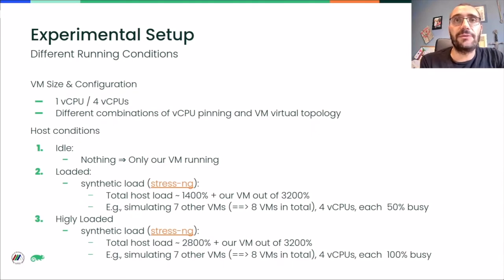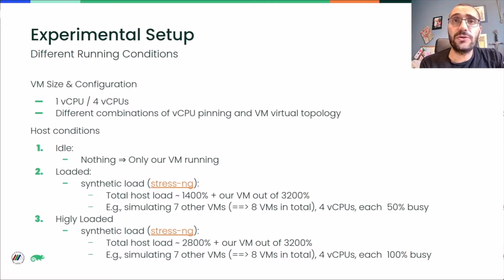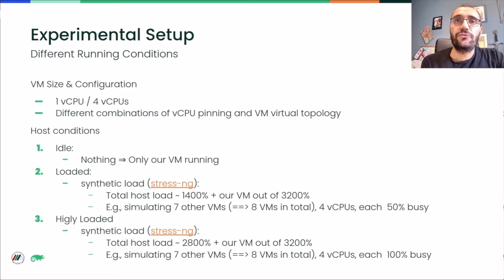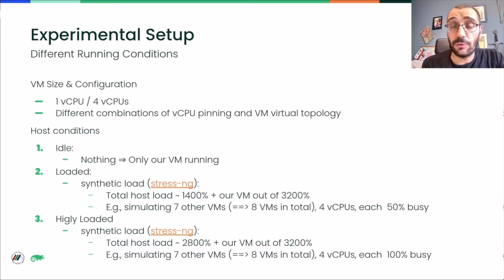We ran all those benchmarks inside our one vCPU VM and then inside the four vCPU VM, and we considered different load conditions for the host. We ran them on an idle host, with 50% load on the host without counting our VM, and with 100% load on the host. For generating load on the host, we used stress-ng threads launched in a way that simulates other VMs running at the same time. In this presentation, we will show a subset of the results we achieved.